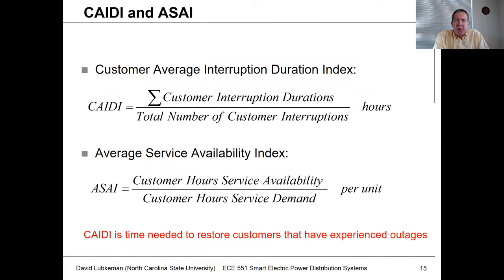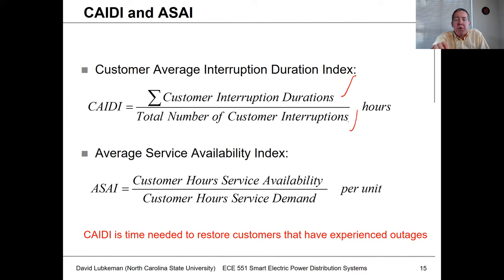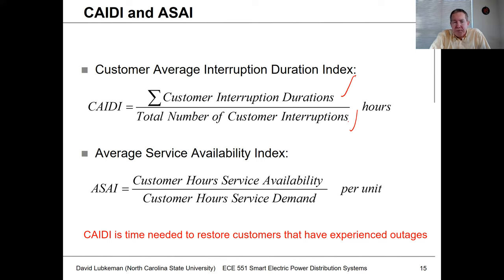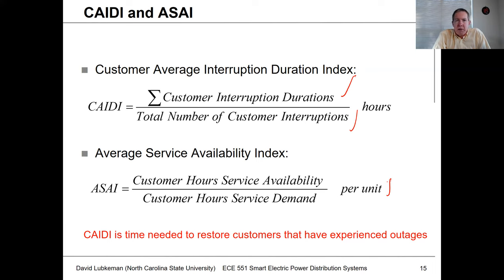Another number used by utilities is CAIDI — Customer Average Interruption Duration Index. For those customers who have an interruption, you look at the total amount of time they're out and normalize by the number of customers interrupted. This essentially measures the response of the utility to fix the problem — a CAIDI of two hours means customers with an outage can expect to wait two hours on average. There's also ASAI — Average Service Availability Index — which is a kind of availability number, though it's not used as frequently.